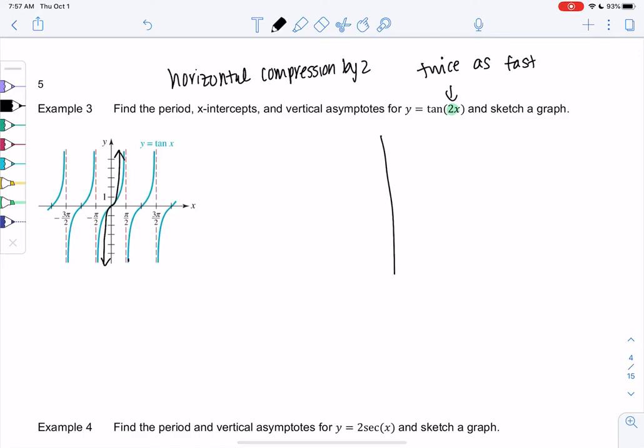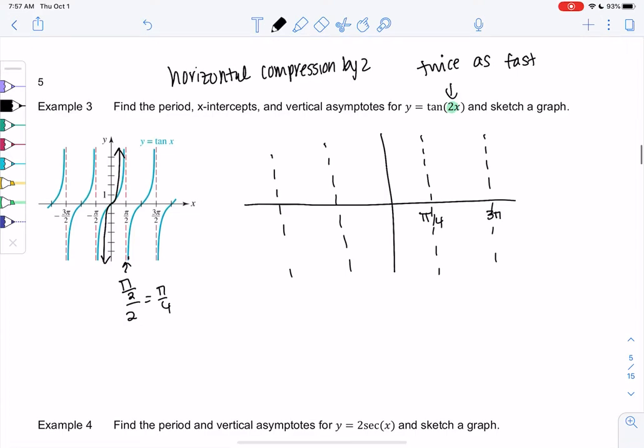Everything's going to happen twice as fast. We're still going to have asymptotes but they're not going to be at π/2, it'll be twice as fast. So π/2 divided by 2 would be π/4, so that's where my first asymptote will be. Then 3π/2 over 2 would give me 3π/4, just cutting everything in half. On the left side we'd have negative π/4 and negative 3π/4.